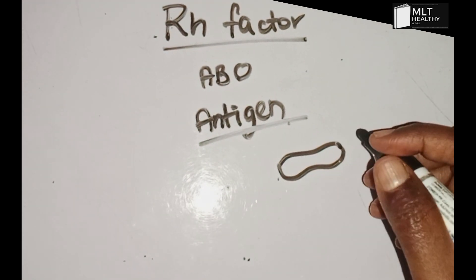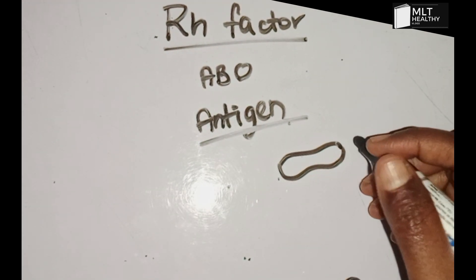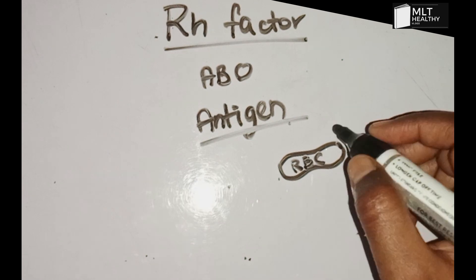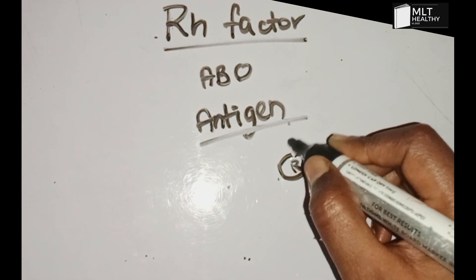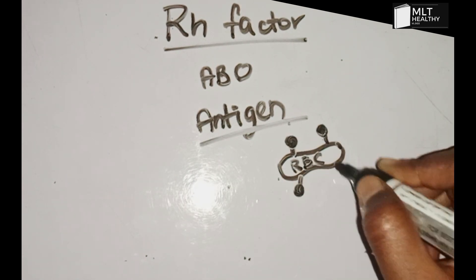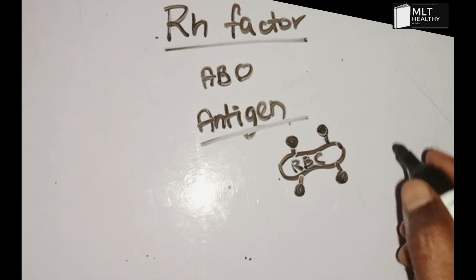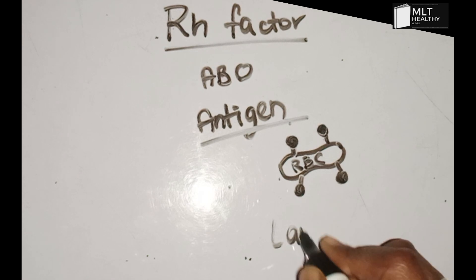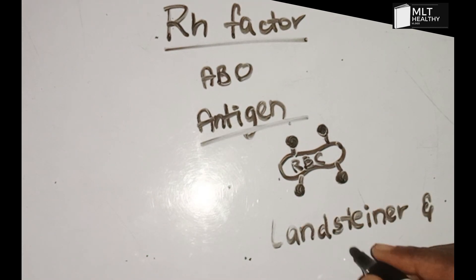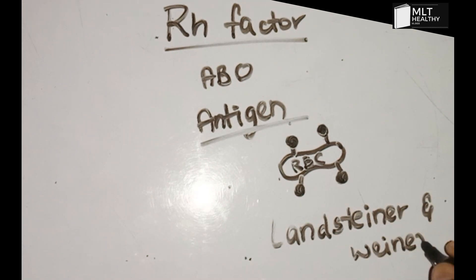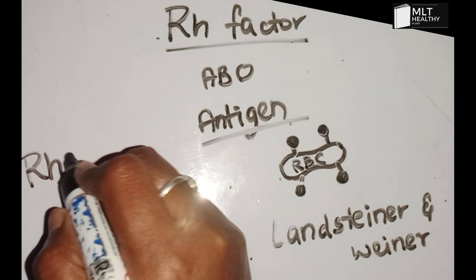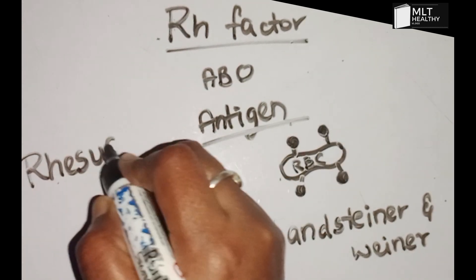The Rh factor is an antigen present on the RBC surface. Landsteiner and Wiener first described the Rh antigen as a type of RBC antigen.